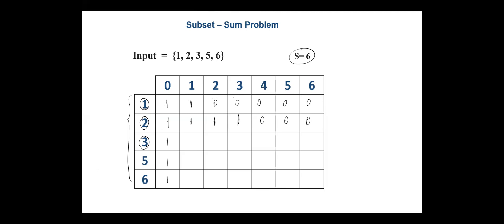Next, we consider integer 3. Since 3 is greater than 1 and 2, we copy from the above cell for those columns. For sum 3: 3 minus 3 is 0, so we add the value at column 0 above (which is 1) to the above cell value (1), giving 2. For sum 4: 4 minus 3 is 1; above row column 1 has 1, added to 0 gives 1. For sum 5: 5 minus 3 is 2; above has 1, giving 1. For sum 6: 6 minus 3 is 3; above row column 3 has 0, so 0 plus 1 equals 1.